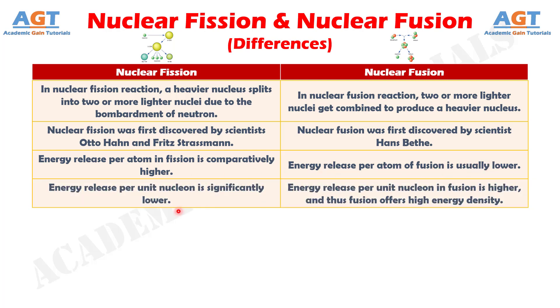Number four: in a nuclear fission reaction, energy release per unit nucleon is significantly lower. Whereas in a nuclear fusion reaction, energy release per unit nucleon is higher, and thus fusion offers high energy density.